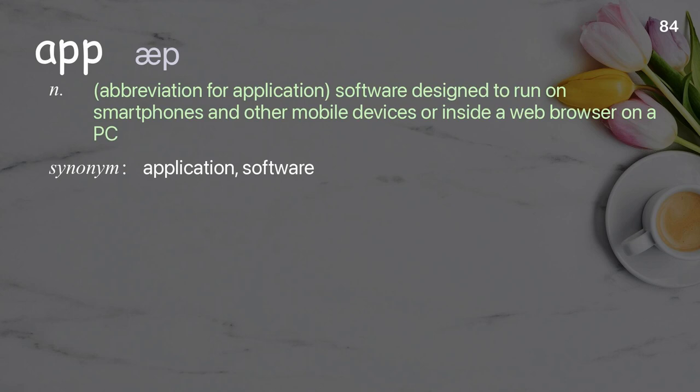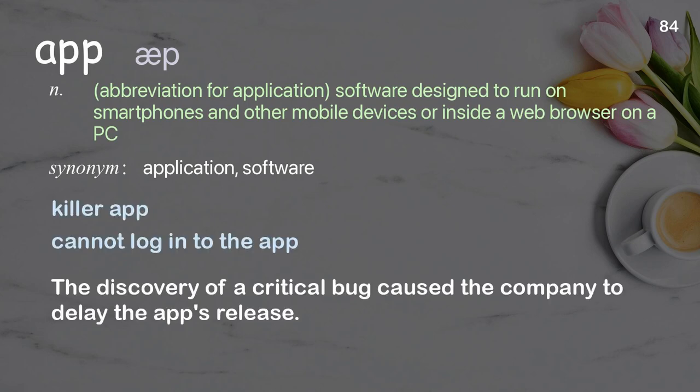App. Abbreviation for application; software designed to run on smartphones and other mobile devices or inside a web browser on a PC. Examples: killer app, cannot log into the app. The discovery of a critical bug caused the company to delay the app's release.